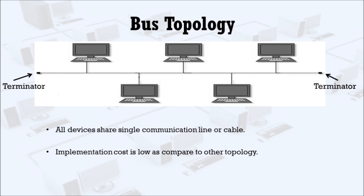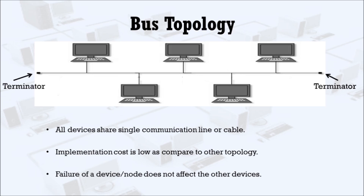Since bus topology consists of only a single wire, it is inexpensive to implement compared to other topologies. It is also a simple form of networking where a failure of a device does not affect other devices. For example, if this device fails to communicate, it will not affect communication between the other devices, because the failure does not affect the cable — the bus.